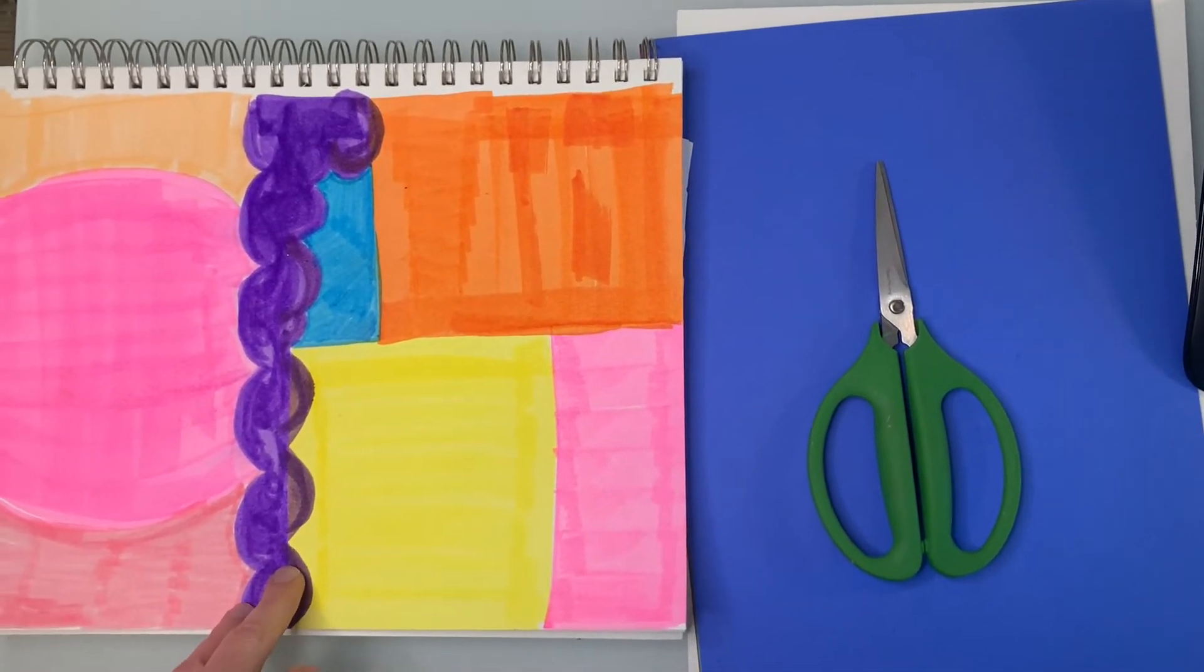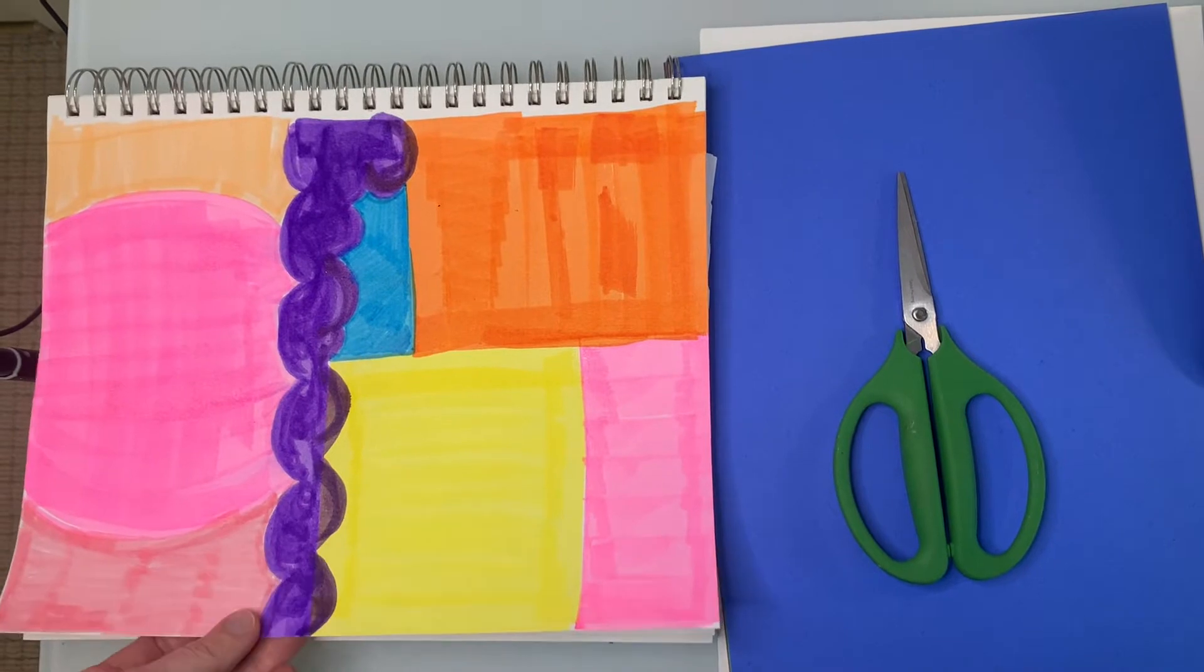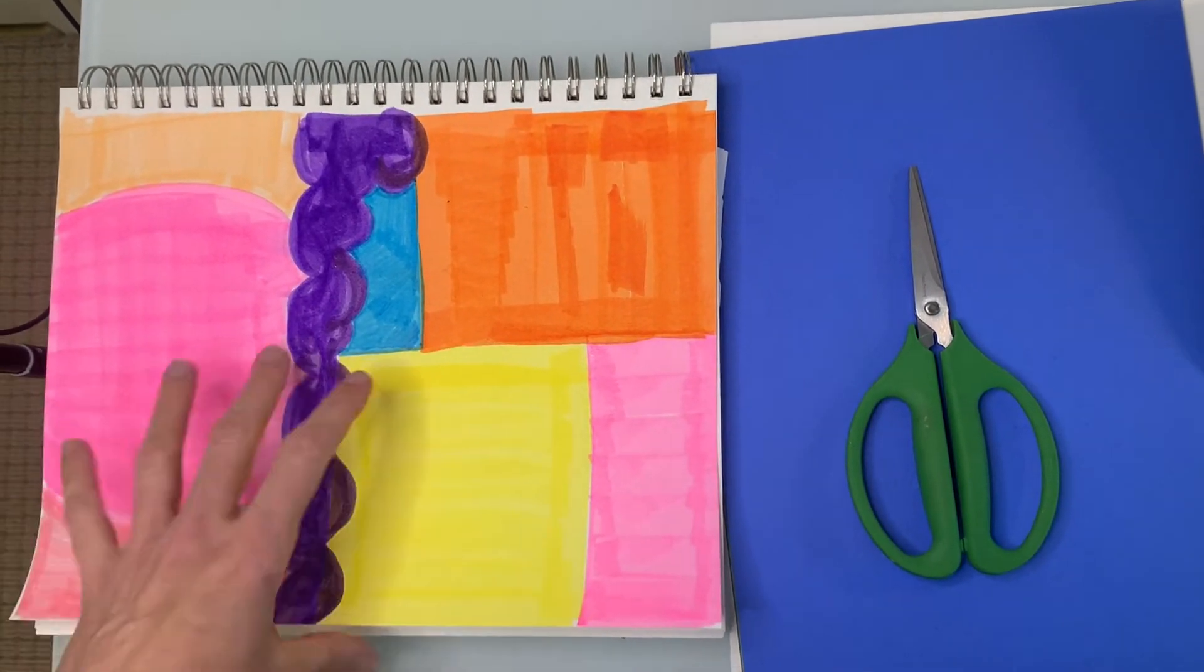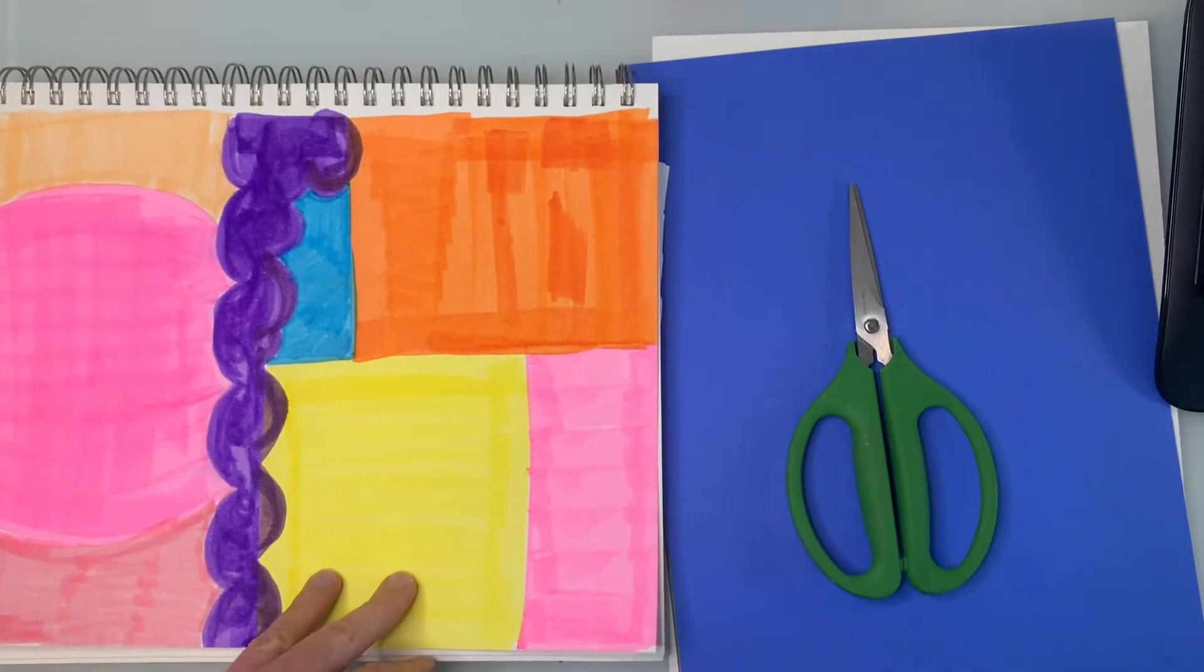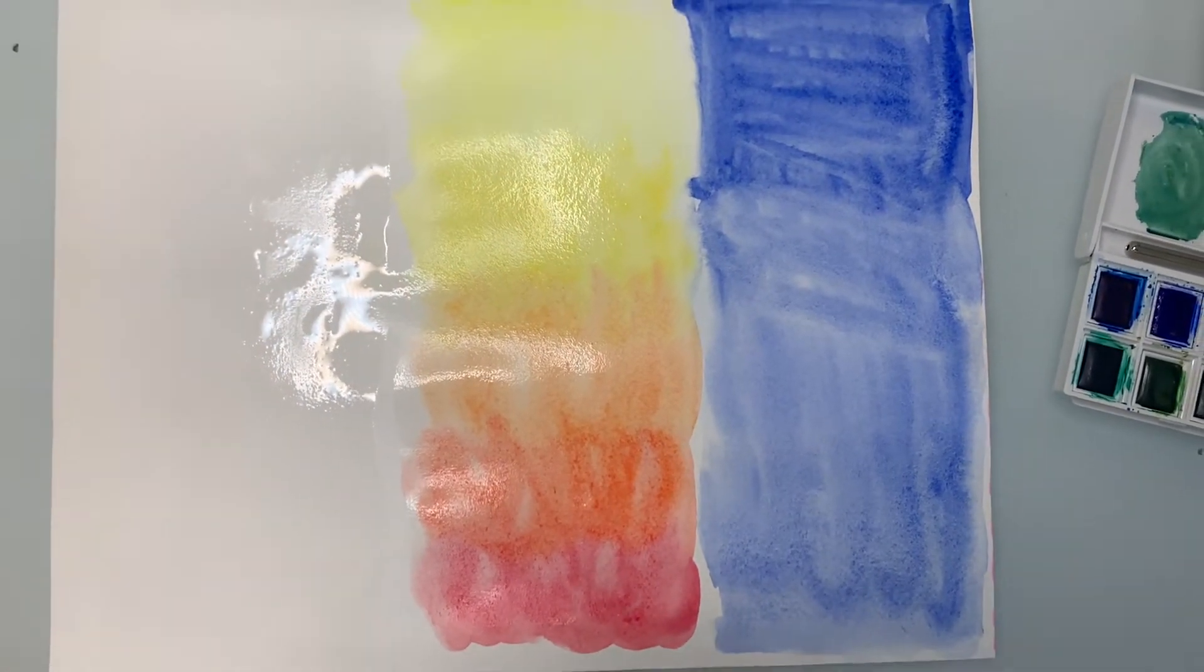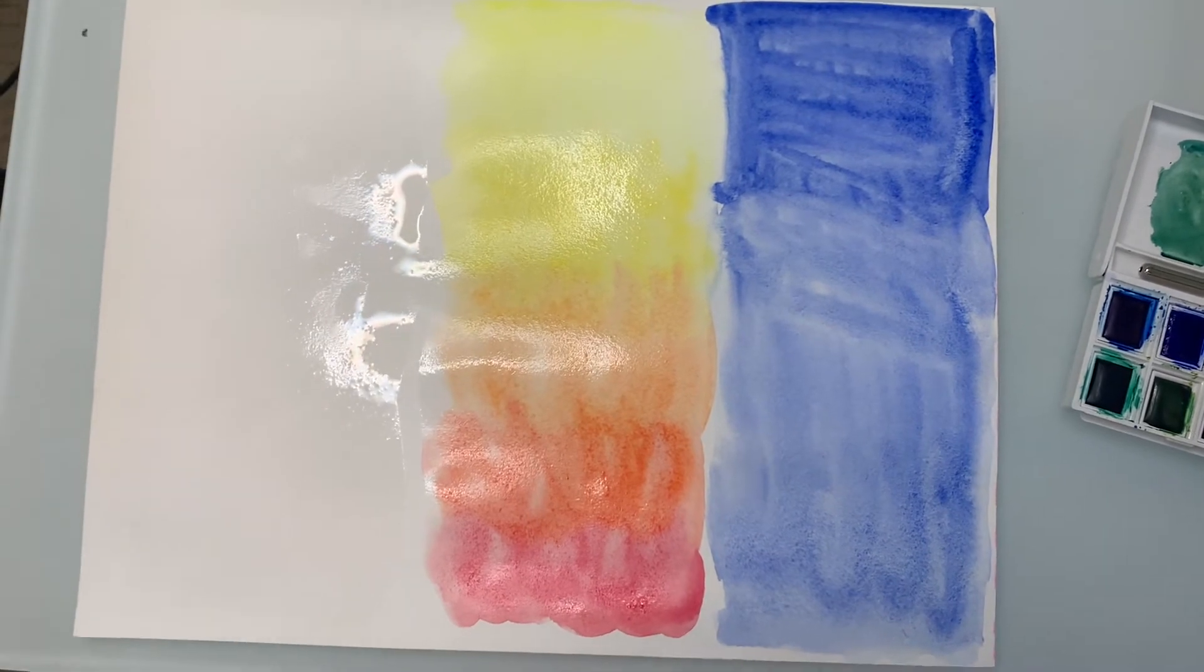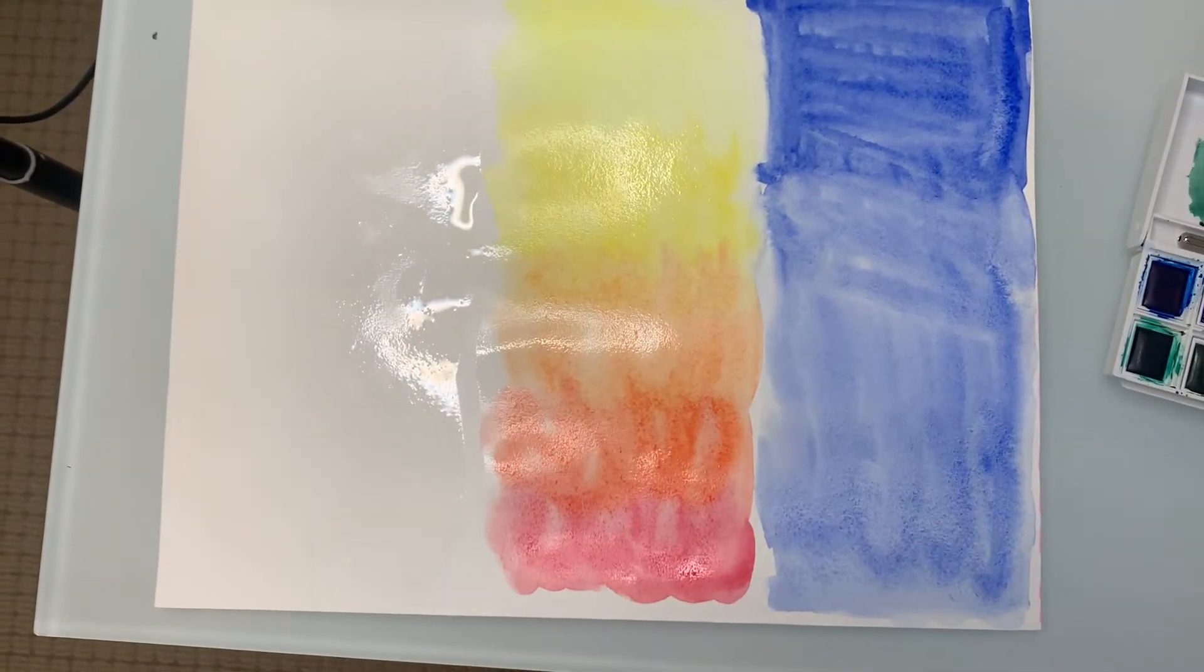The first step that's going to take a while is we are going to create these three pages of color such that we can then cut it out. So here I am painting my second piece of paper that I'm going to ultimately let dry and cut out.